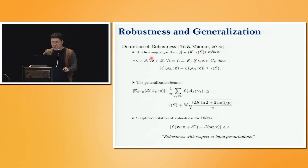A learning algorithm is called epsilon robust if its perturbation with respect to input is bounded by epsilon. Robustness with respect to input perturbation is a classical viewpoint of generalization, and we can get this generalization bound by adopting epsilon robustness.